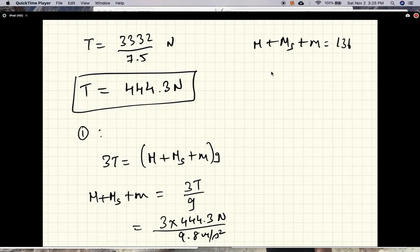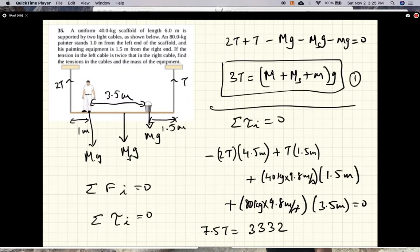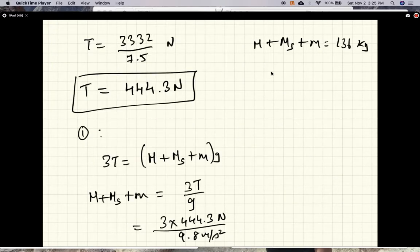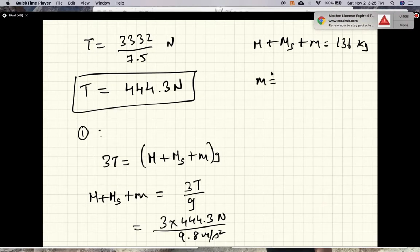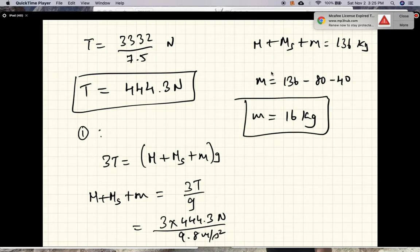136 kgs, okay, and so the mass of the bucket is 136 kgs minus 80 kgs minus 40 kg, this is 80 kg and that's 40 kg, so 16 kgs. So the mass of the bucket is 16 kgs, okay, and that finishes this problem.